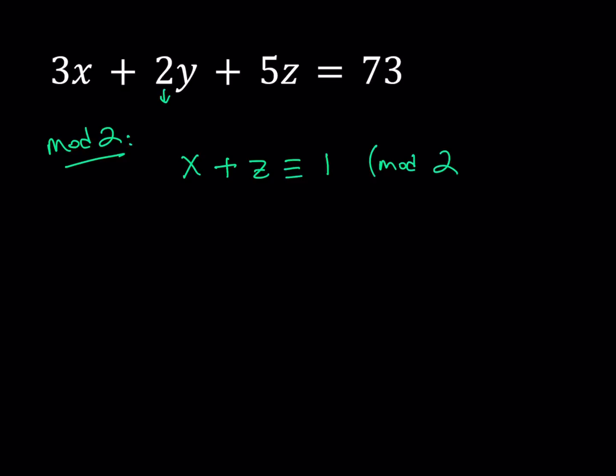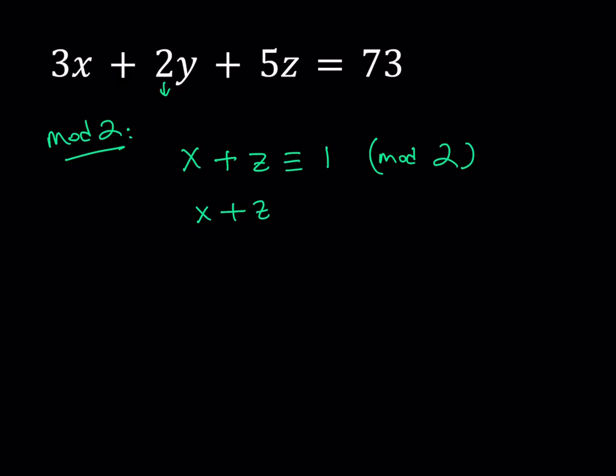We can write it as a congruent statement: x plus z is congruent to 1 mod 2. What is that supposed to mean? It means that x plus z leaves a remainder of 1 when divided by 2. So I can basically write it as x plus z equals 1 plus 2k, where k is an integer.